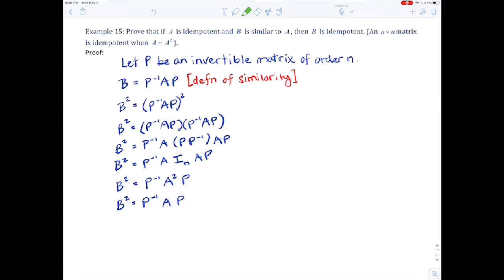If you take a look here, wasn't B equal to that, and we have B squared equal to that? So what must be true? Awesome. B must equal B squared. And this step was because A is idempotent.